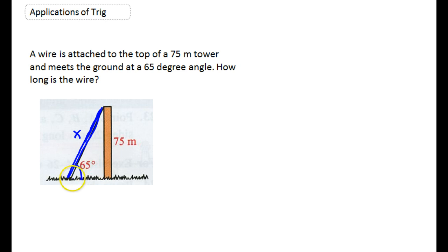If we are standing at this 65 degree angle, then 75 is the opposite side and x is the hypotenuse. The sine of an angle is equal to the opposite side over the hypotenuse. So let's solve for x. I'm going to multiply both sides by x and divide by the sine of 65.